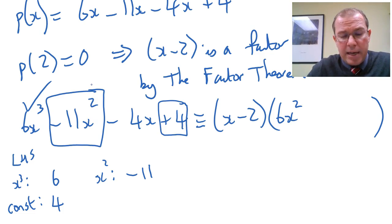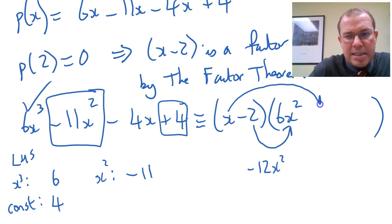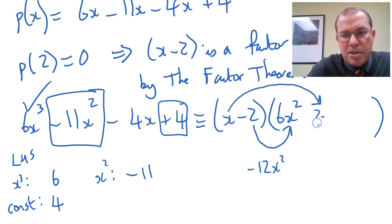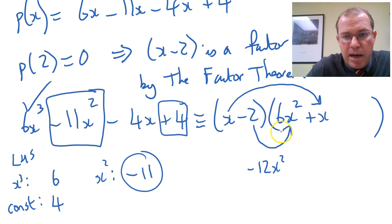So I have to have minus 11 on the right-hand side. There are only two ways to generate x squared. Minus 2 times the number of x squareds would generate a minus 12x squared. And the other way of generating x squared would be x times whatever number of x's I put into there. So there are only two ways of generating, and that's why this is so beautiful. There's only ever two ways of generating these middle terms. So we've got minus 12x squared, and we actually don't want minus 12x squared. We want minus 11x squared. So I need to add a 1x there. Because minus 12x squared, add 1x squared, gives me the minus 11x squared. So I know it has to be a 1x there.